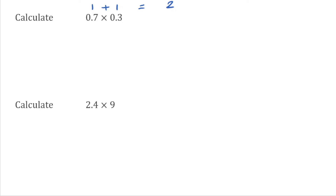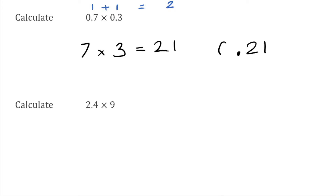All we do now is do the calculation without any decimal places at all. So we've got 7 multiplied by 3, which is 21. Using this 21, we know our answer has to be to two decimal places. So we put the decimal place in front of the 2 and a 0 in front, giving us an answer of 0.21.